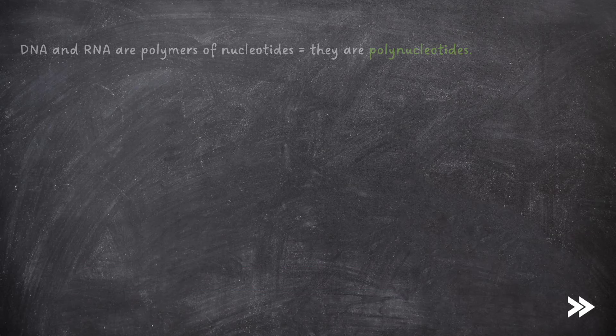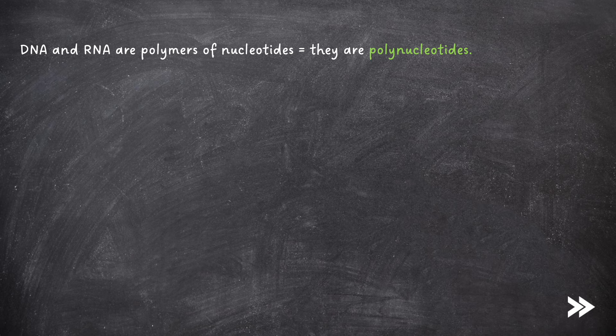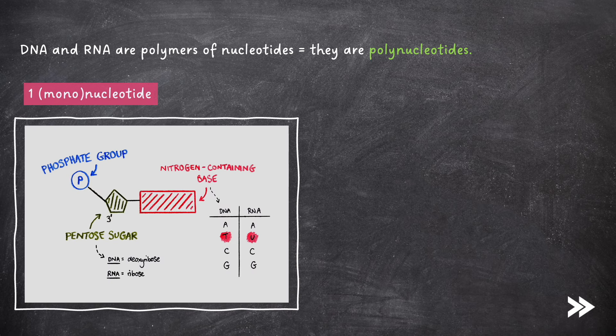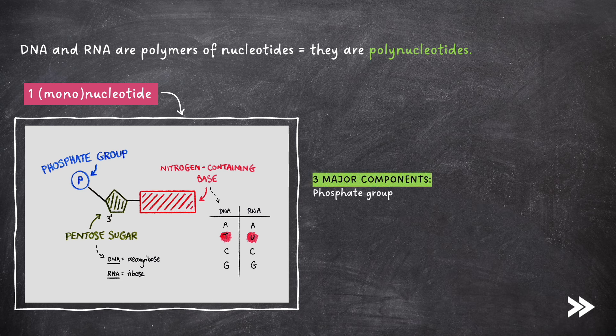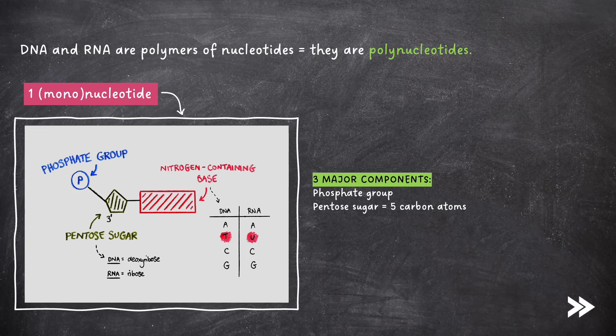DNA and RNA are polymers of nucleotides, hence they're called polynucleotides. Here we have the structure of one nucleotide, also called a mononucleotide. First, we have a phosphate group, which is bound to the 5' end of a pentose sugar, pentose meaning it contains 5 carbon atoms. The pentose sugar can either be deoxyribose in DNA, or ribose in RNA.